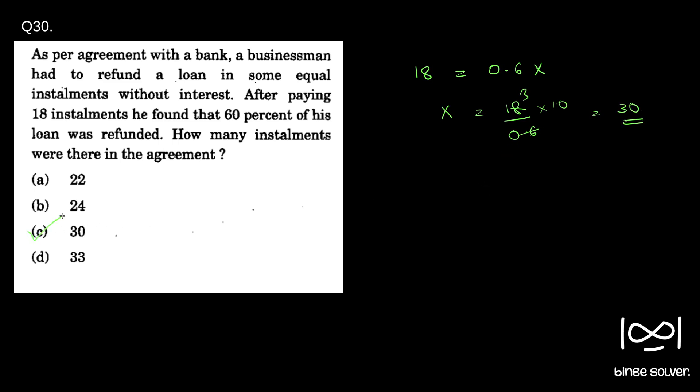So C is the correct answer. For paying x amount it will take 30 installments. If paying 0.6x took 18 installments, then paying x amount will take 18 by 0.6, or 30 installments. So that is the solution to question 30, option C.